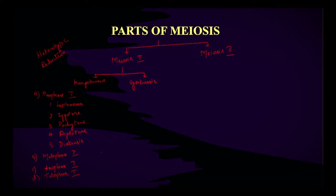Coming to meiosis 2, this is called homotypic and also equational division, because here the number of chromosomes remains the same and is not going to change — that's why it is called equational division.